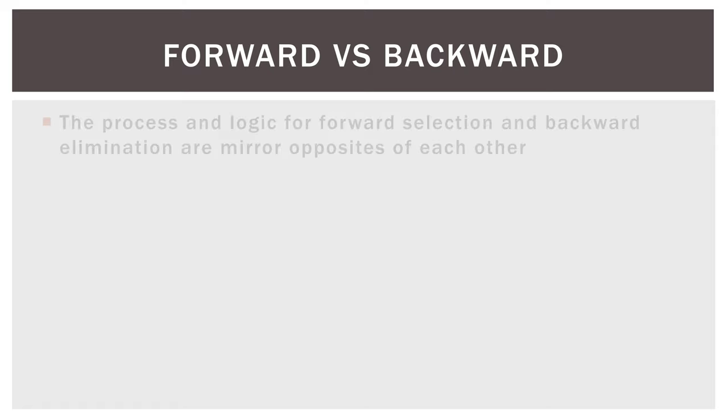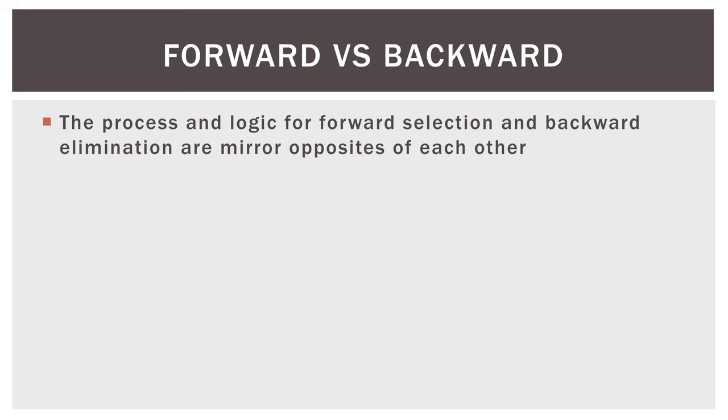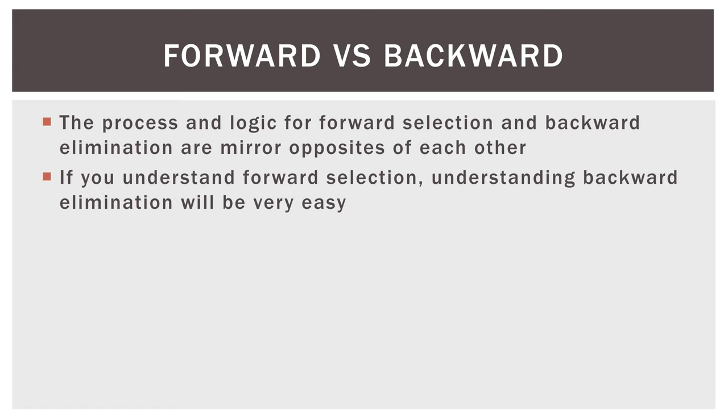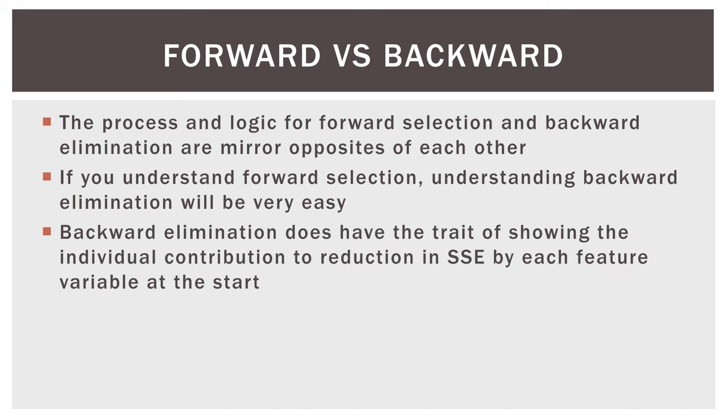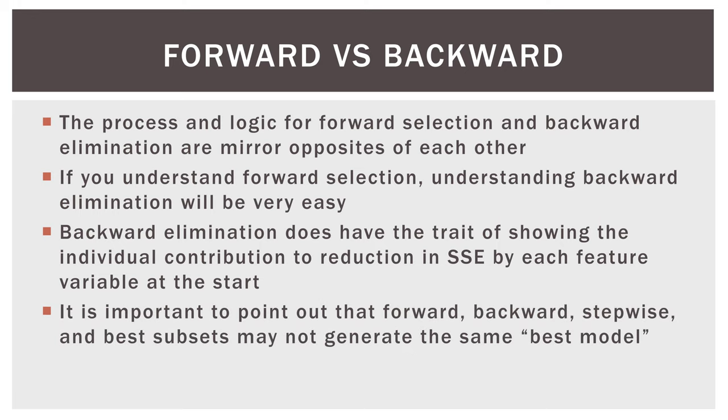So forward versus backward. The process and logic of forward selection and backward elimination are mirror opposites of each other. If you understand forward selection, understanding backward elimination will be very easy. Backward elimination does have the trait of showing the individual contribution to reduction in SSE, which is sum of squares due to error, by each feature variable at the start. It is important to point out that forward, backward, stepwise, and best subsets may not generate the same best model. And we'll talk about that more as we look at all four together.